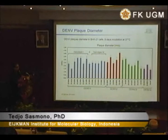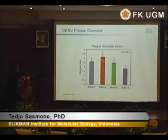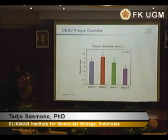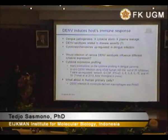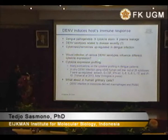We measured plaque size on 28 samples of different dengue virus strains — genotype 1 and genotype 4 of dengue 1, dengue 2, dengue 3, and dengue 4. The sizes are quite diverse across strains. When we look at the mean data, the result is consistent — dengue 2 has quite a large plaque size compared to others.